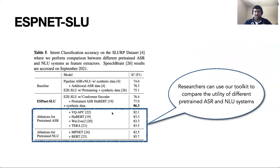For the SLURP dataset, we analyzed using different pre-trained ASR systems as feature extractors and observed that they do not give improved performance over the FBANK features. We observed that the mask reconstruction-based pre-trained ASR system TERA performs the best, whereas the autoregressive reconstruction-based pre-trained ASR system VQ-APC performs best among different pre-trained ASR systems. We also analyzed the impact of pre-trained NLU systems to incorporate semantic information, showing that researchers can use our toolkit to compare the utility of different pre-trained ASR and NLU systems as feature extractors.